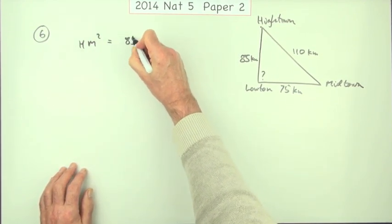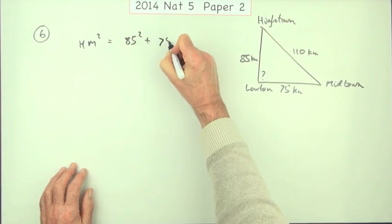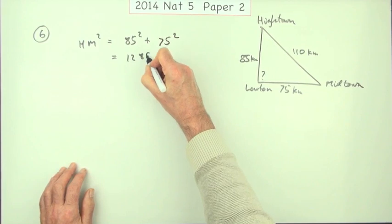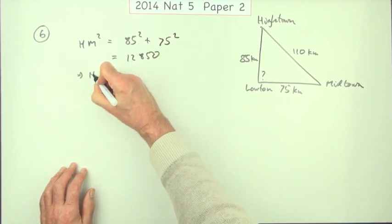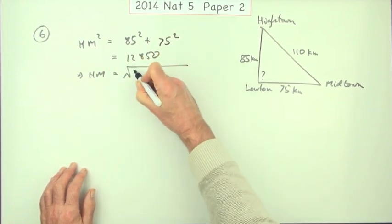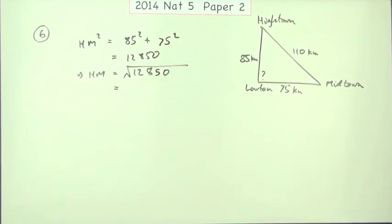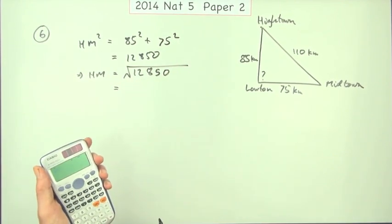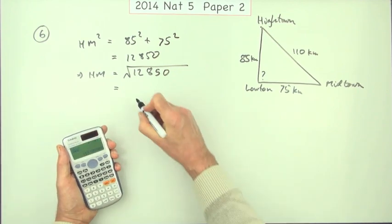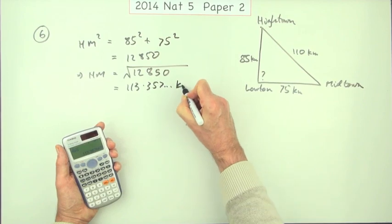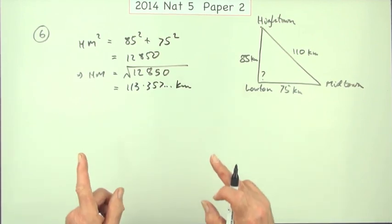HM squared should be 85 squared plus 75 squared. You already got that to be 12,850, which means that HM is going to be the square root of that, the square root of 12,850, which gives you 113.357 and so on kilometers.